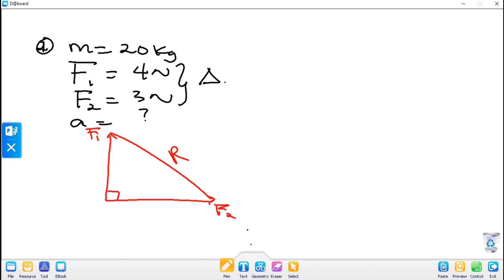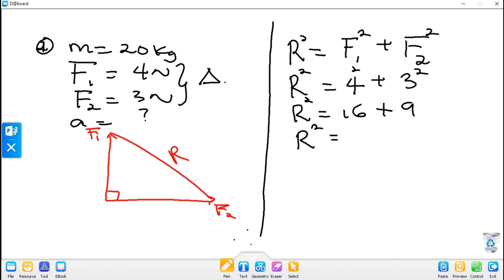To obtain the resultant, I'm going to apply Pythagoras theorem. Pythagoras theorem states that R squared equals F1 squared plus F2 squared. So R squared becomes 4 squared plus 3 squared. R squared becomes 16 plus 9, which gives us 25.